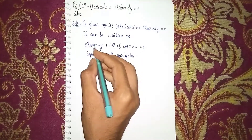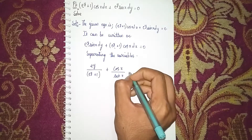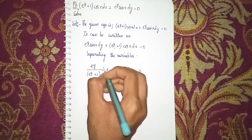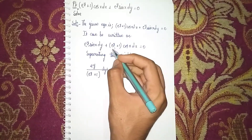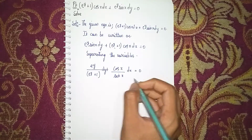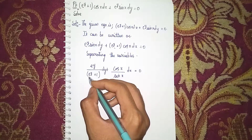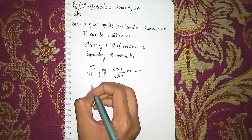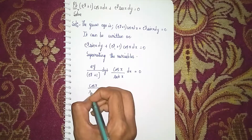With sin x in the denominator on the x side, we get: cos x / sin x = −e^y / (e^(y+1)), after sending the e^y / (e^(y+1)) term to the other side.